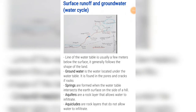Direct runoff is water flowing over the surface of the land into rivers. Indirect runoff is water that is already in the soil that is fed into rivers. The line of the water table is usually a few meters below the surface and generally follows the shape of the land.